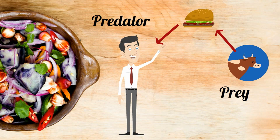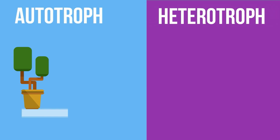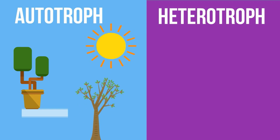Living things can be classified into two large categories: autotrophs and heterotrophs. Autotrophs generate energy from the sun through a process called photosynthesis. Examples include plants and phytoplankton.